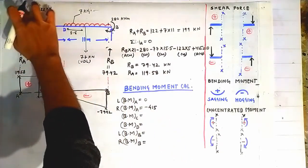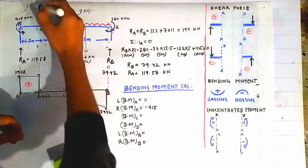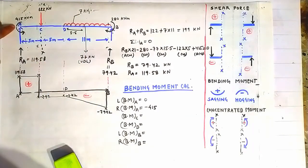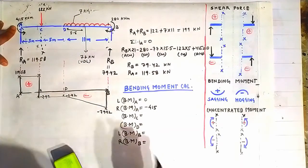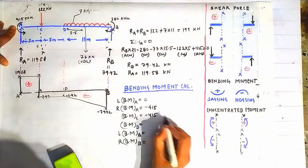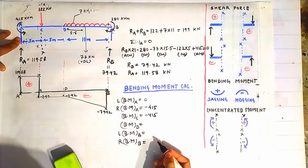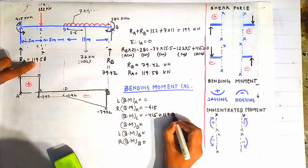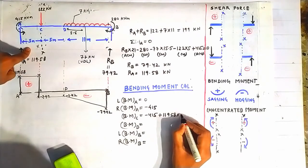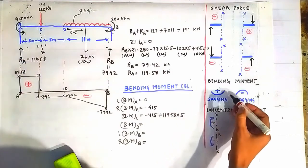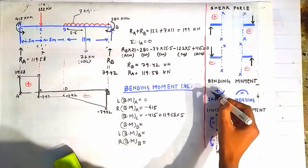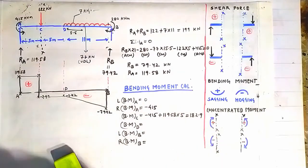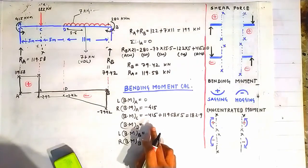For bending moment at point C, construct a section through C. Because of the concentrated moment there is −415 kN·m, and because of reaction RA there is a moment of +119.58 × 5 = +597.9 kN·m (sagging, taken as positive). This gives a bending moment at C of 182.9 kN·m.